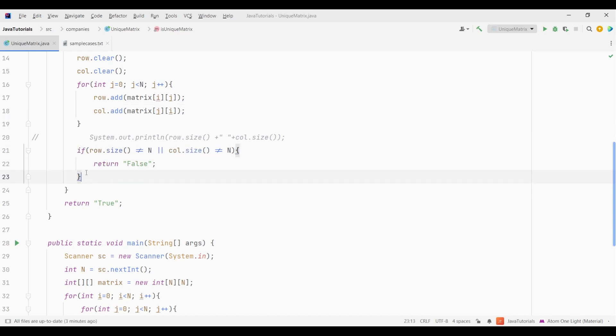Now after the inner loop terminates, our sets will have the elements from the respective row and column. Now we will check if either of the sets size is equal to n. Which means if any one of the set has a size not equal to n, we will return false.